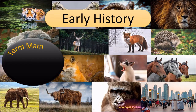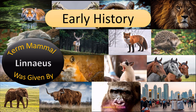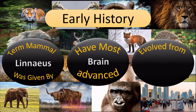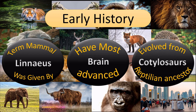In early history, the term mammal was first given by Linnaeus. Mammals have the most advanced brain and evolved from reptilian ancestors called Cotylosaurus. Keep in mind that mammals did not evolve from birds — rather, reptiles diverged into two lineages: one leading to mammals and the other to birds. So reptiles are the common ancestors of both birds and mammals.